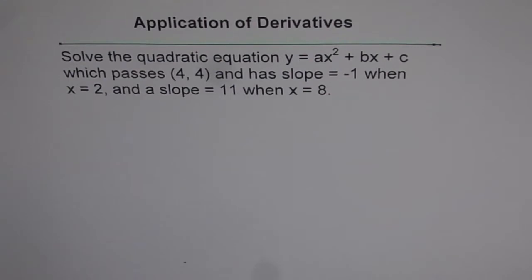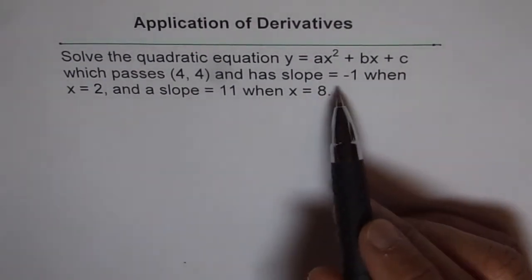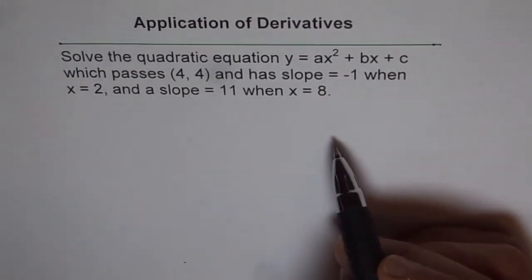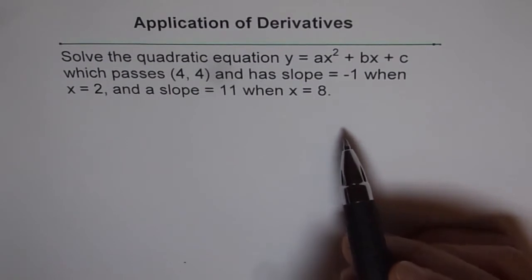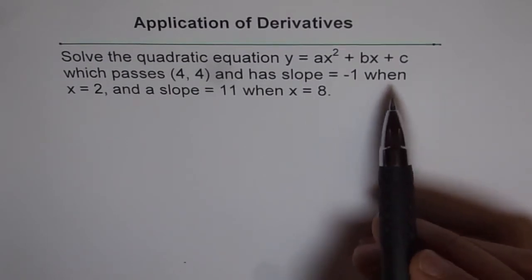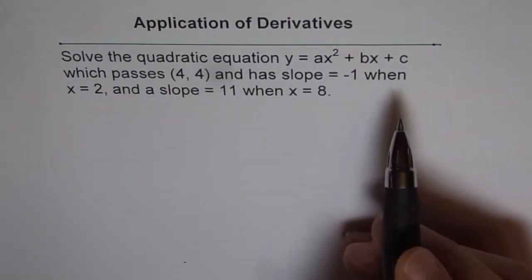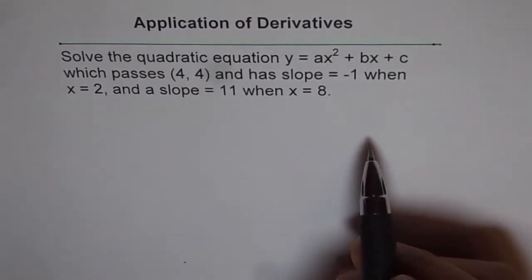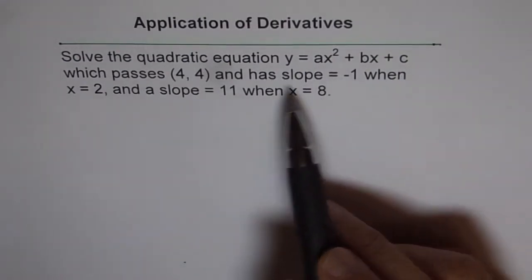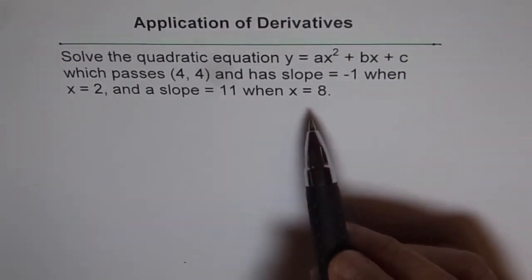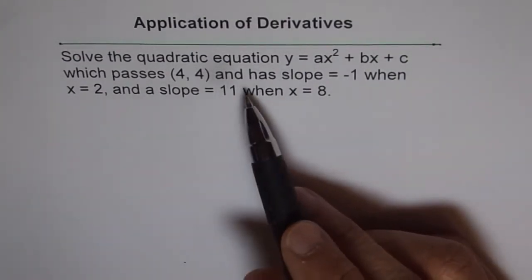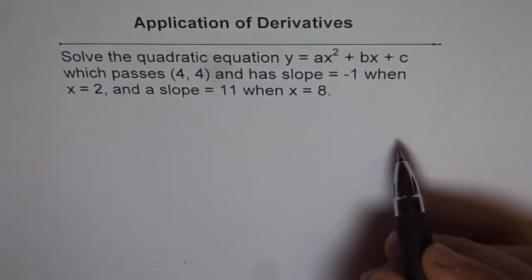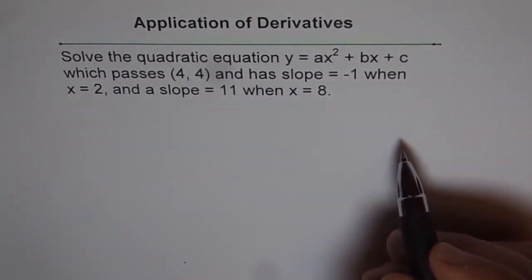In this question, we are given a quadratic equation and three conditions. We need to solve for the values of a, b, and c. There are three unknowns and we have three conditions, so with these three conditions we will get three equations, which will help us solve all three unknowns. That is the strategy.